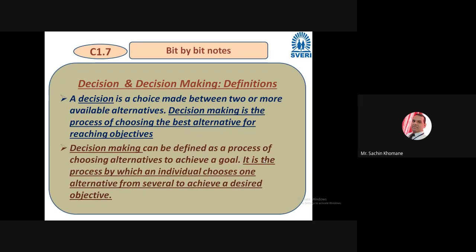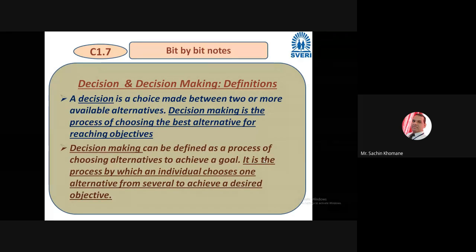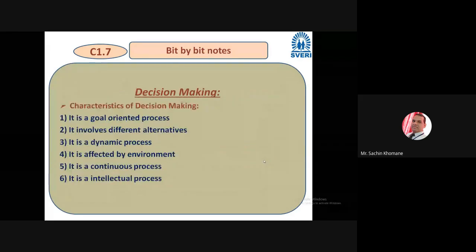In short, decision making is choosing one option from several options for the desired objective. Even for MCQs, there is one question with four options and you have to choose the correct one — you have to make a decision. That process of choosing the correct option is called decision making.